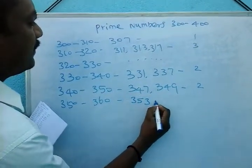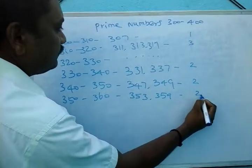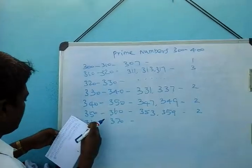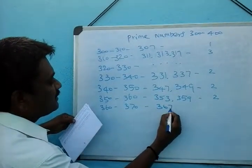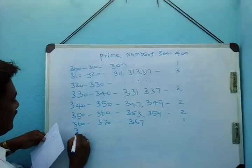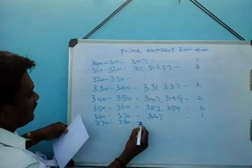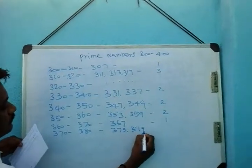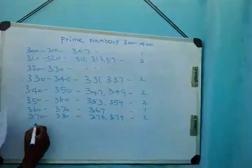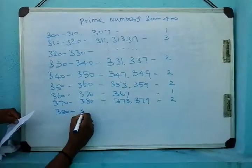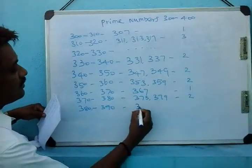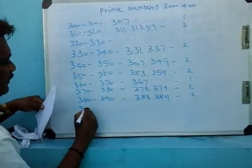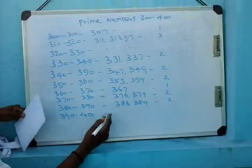350 to 360: two prime numbers — 353 and 359. 360 to 370: one prime number — 367. 370 to 380: two prime numbers — 373 and 379. 380 to 390: two prime numbers — 383 and 389.